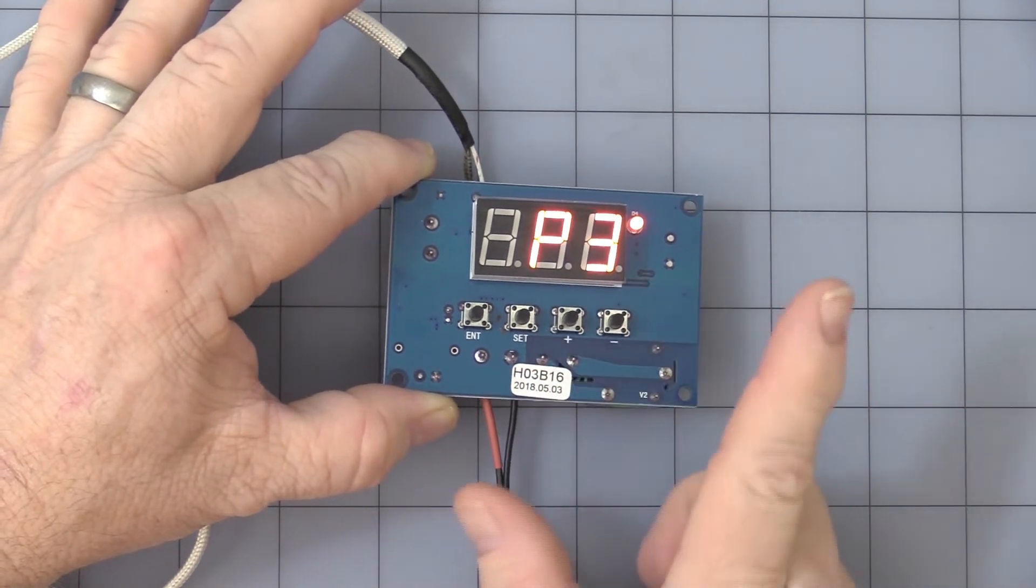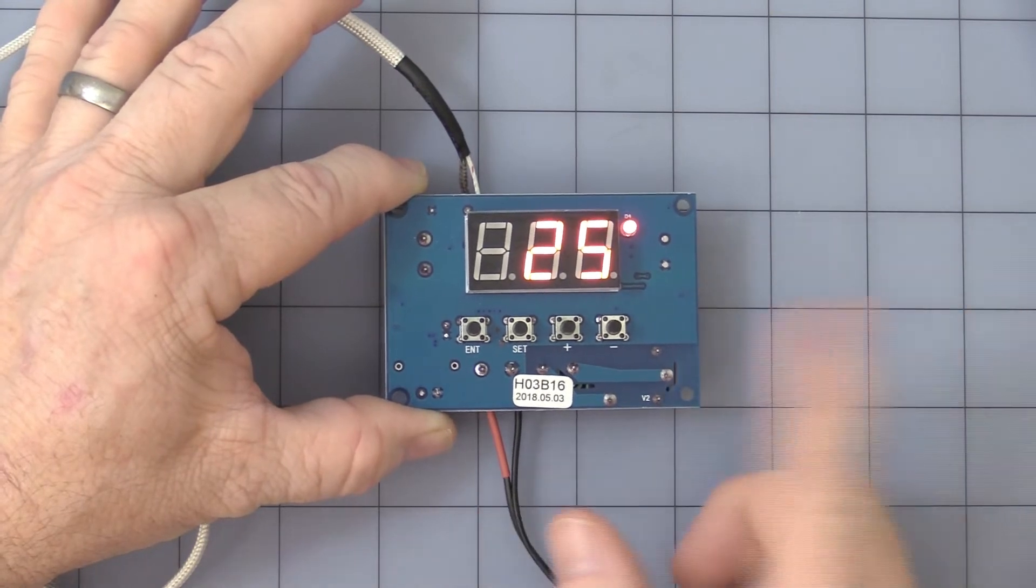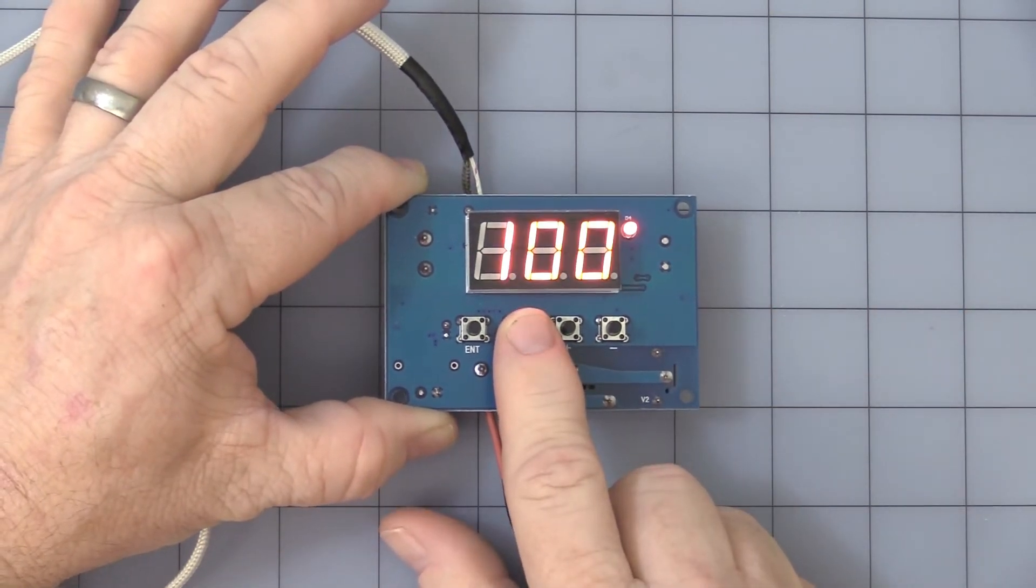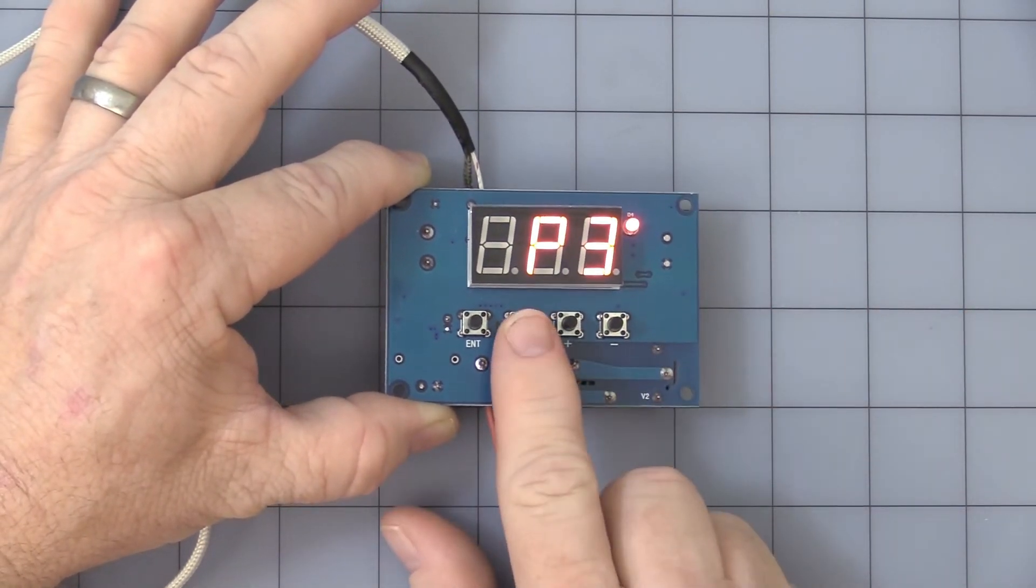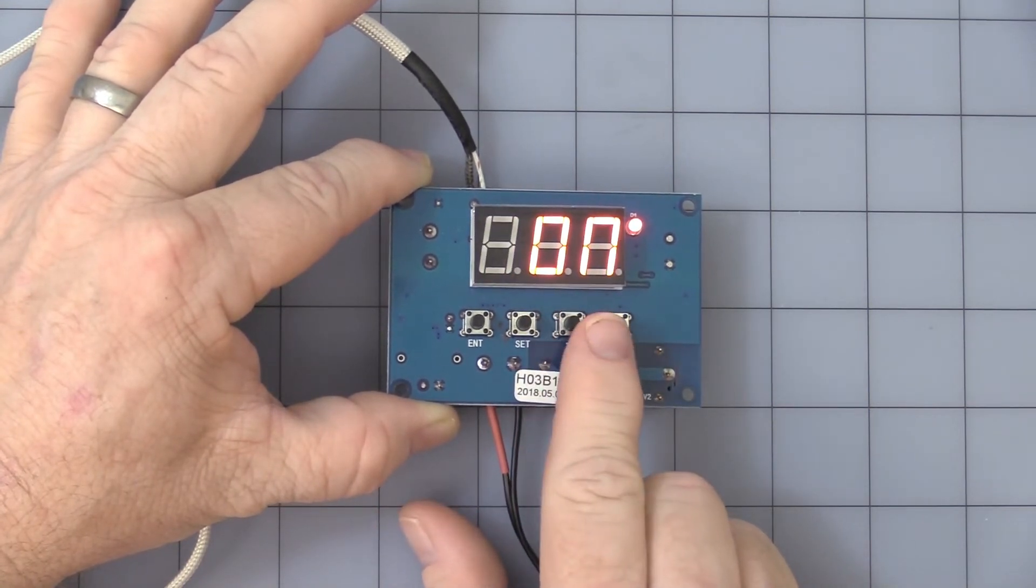P2. Now we got a P3. P3 is a high temperature alarm, and it's only high temperature. Let me get back in there. P3. Set button again. You can turn it on or off. We'll turn it on.